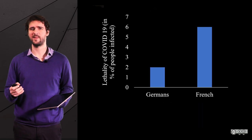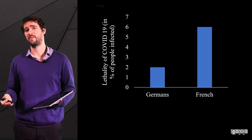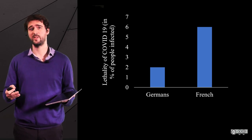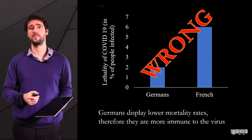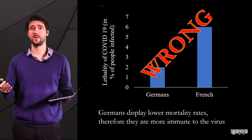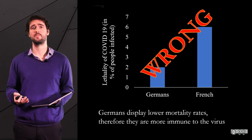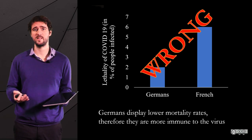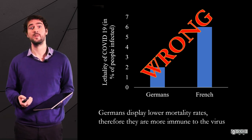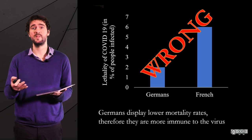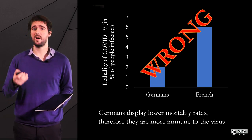Why do we call it affirming the consequent, by the way? Well, the term consequent is the name of the second part of a conditional statement — the one that usually follows 'then'. If p then q, q is the consequent. If it rains, then the street is wet — 'the street is wet' is the consequent.